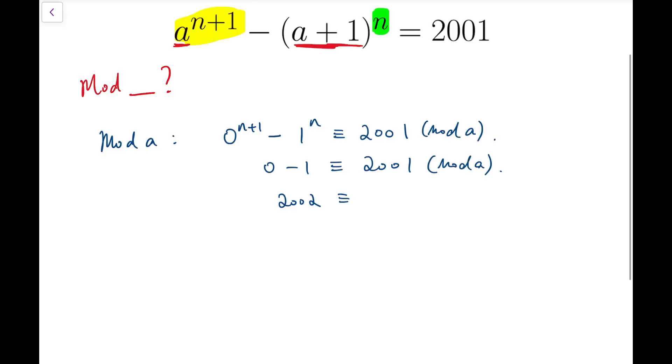And so 2002 is congruent to 0 mod a. We usually have a number next to mod to be some known integer, but this time it's kind of reversed, so we say something differently, which is that a has to be the divisor of 2002.